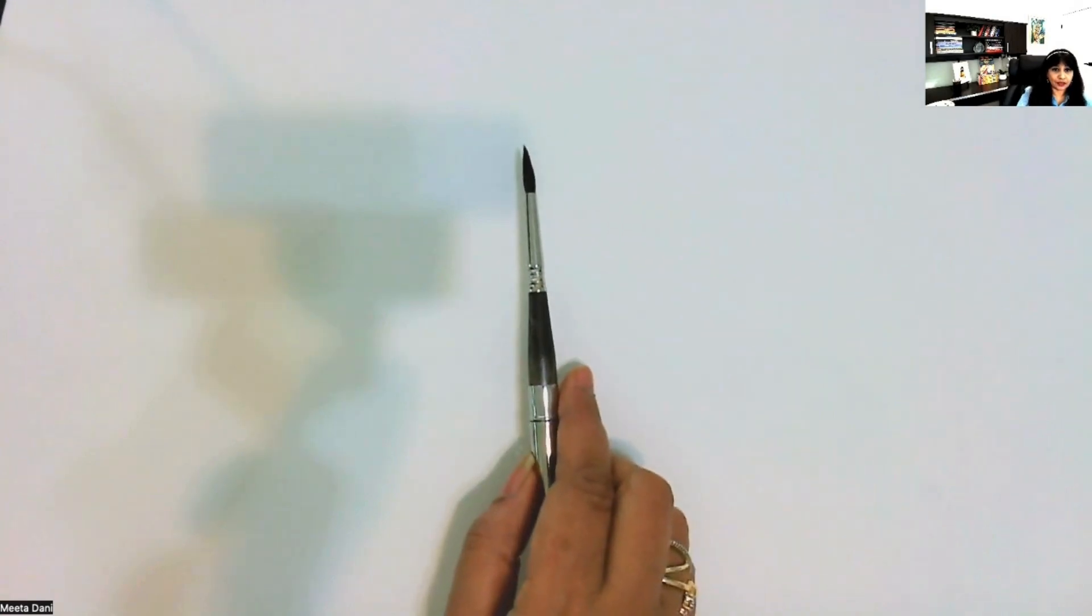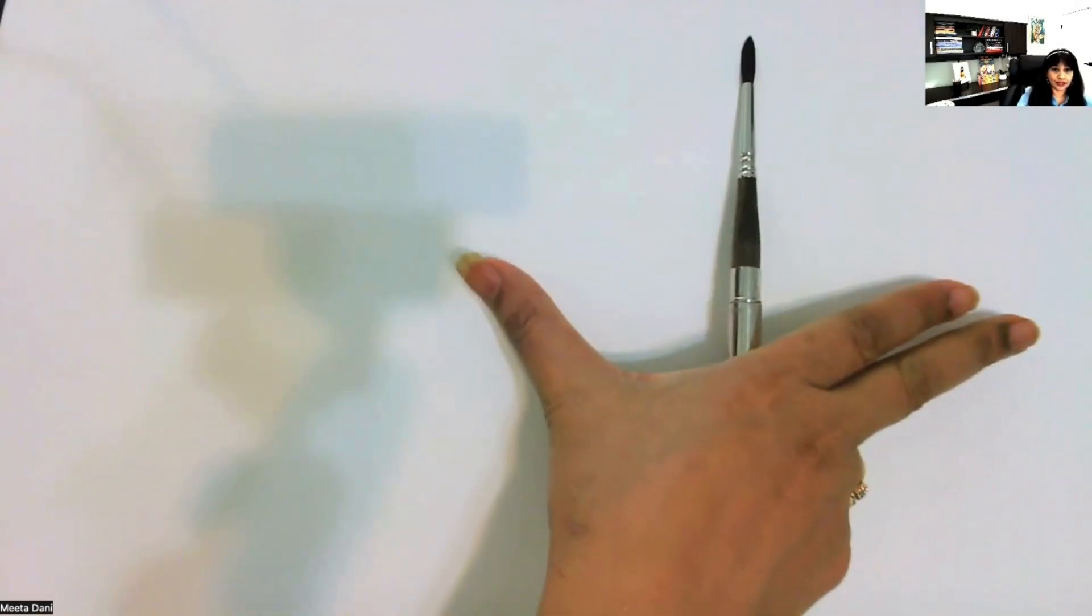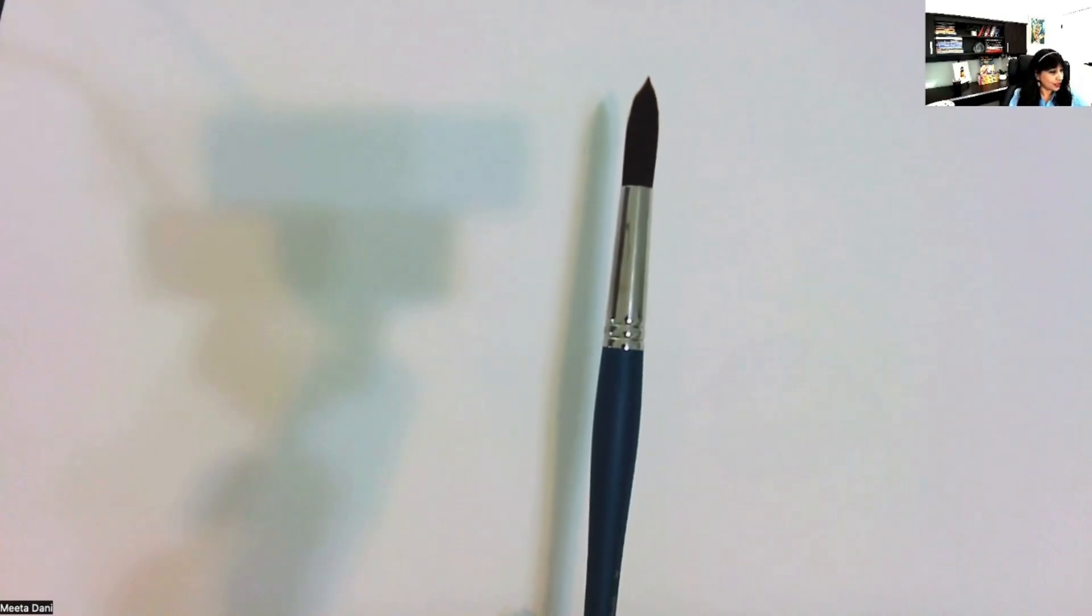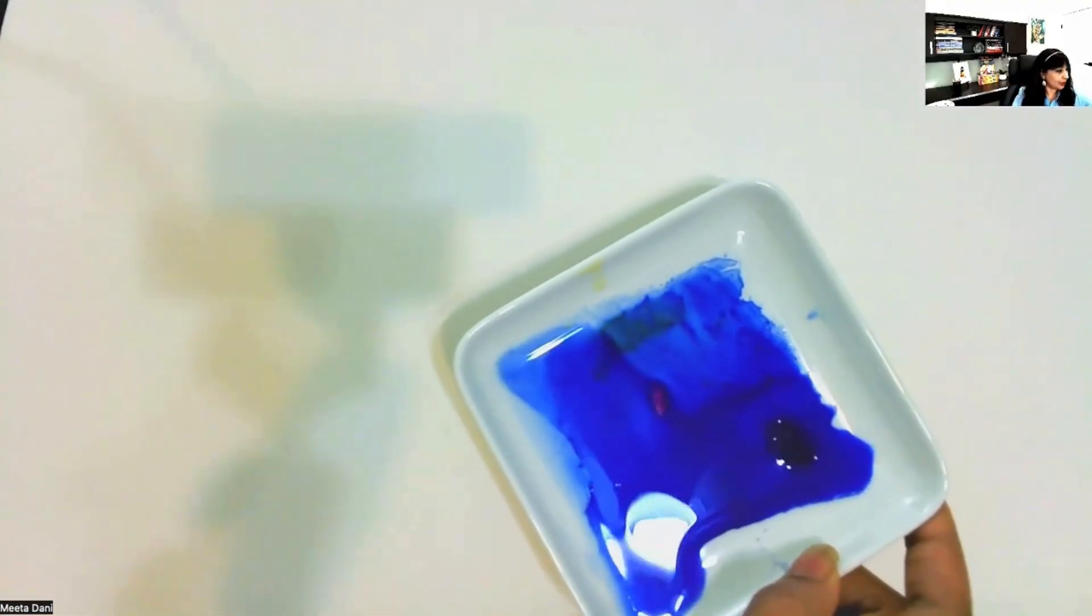This brush will easily cover from this point to this point. On the other hand, if you want to make this much big painted area with flat wash, in that case a bigger brush will be ideal for you. So to demonstrate I will use this bigger brush and I have kept this paint ready.